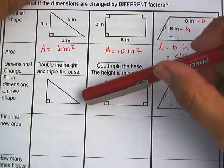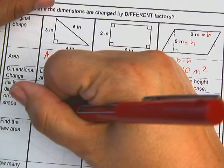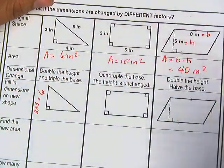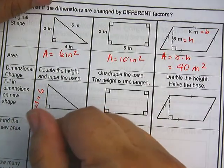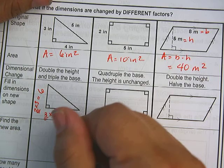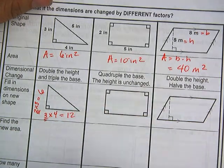So for this first one, I'm going to double the height and triple the base. So double the height, 2 times 3 equals 6. Triple the base, 3, there's my factor. 3 times 4 equals 12.